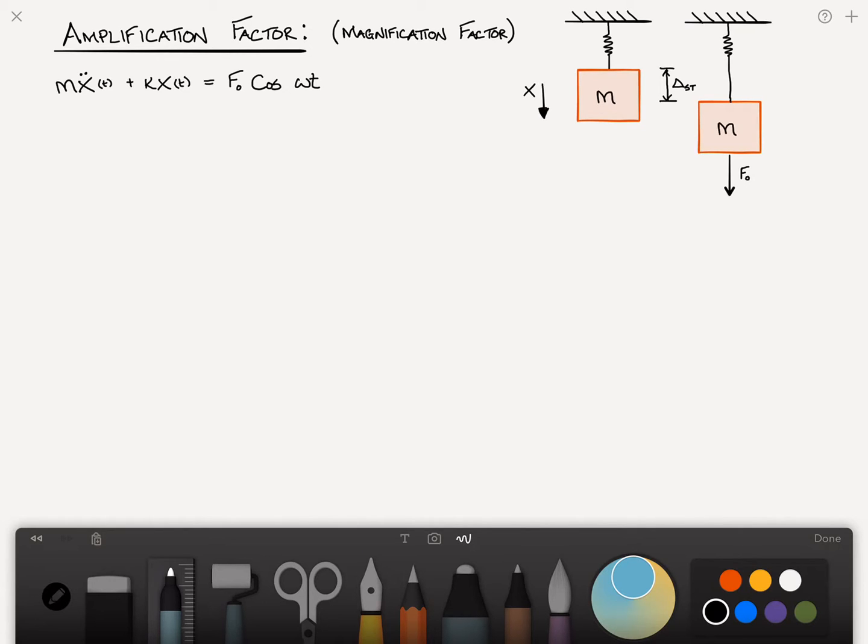And of course the static deflection can just be found as delta st is just equal to, and this is from the spring equation, f zero divided by k. f is k x, so f over k is x.